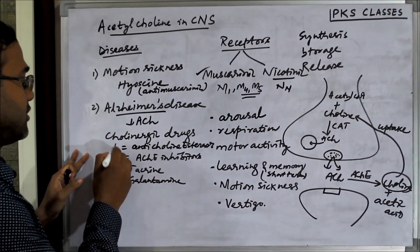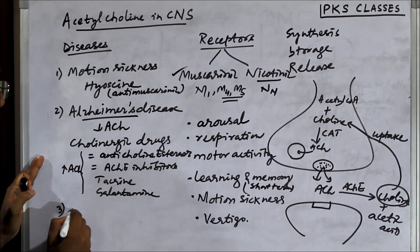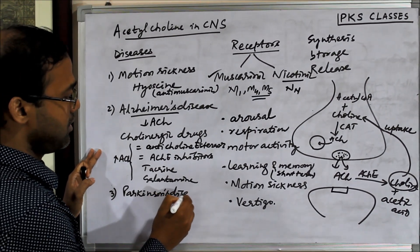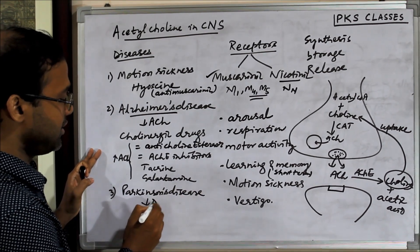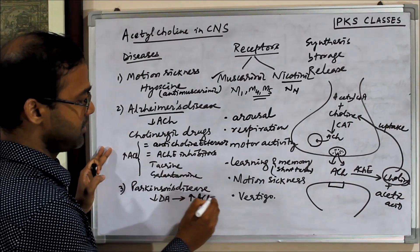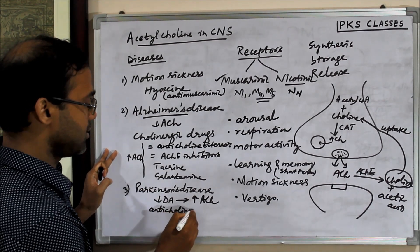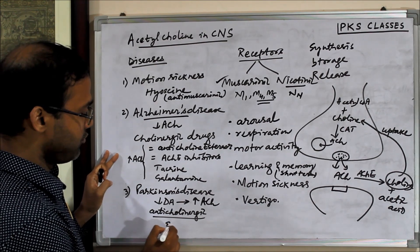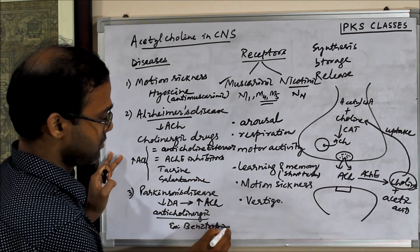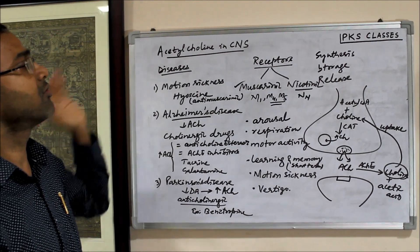These drugs increase the level of acetylcholine. Then we have Parkinson's disease. In Parkinson's disease, there is a decrease in dopaminergic activity, which leads to an increase in cholinergic activity. So we can give anticholinergic drugs in Parkinson's disease, and an example is benztropine. So these are some of the important diseases where acetylcholine has a role.